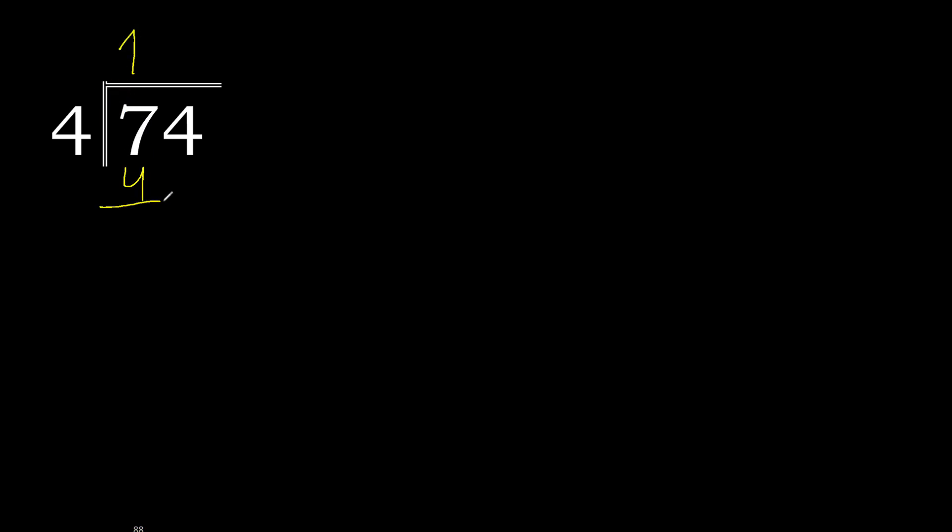704 divided by 4. 7 is not less, therefore start with 7. 4 multiplied by which number is nearest to 7 but not greater? 4 multiplied by 2 is 8 — 8 is greater. 4 multiplied by 1 is 4. 7 minus 4 is 3.